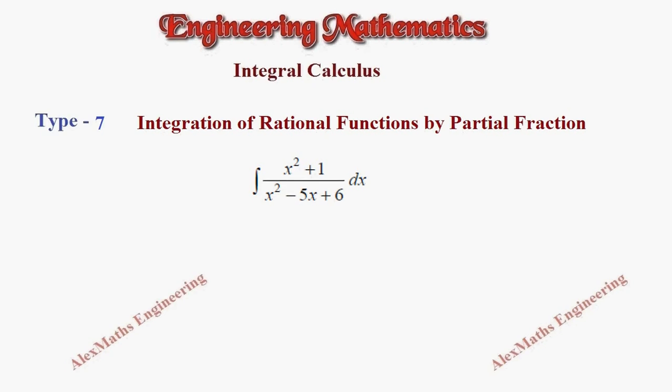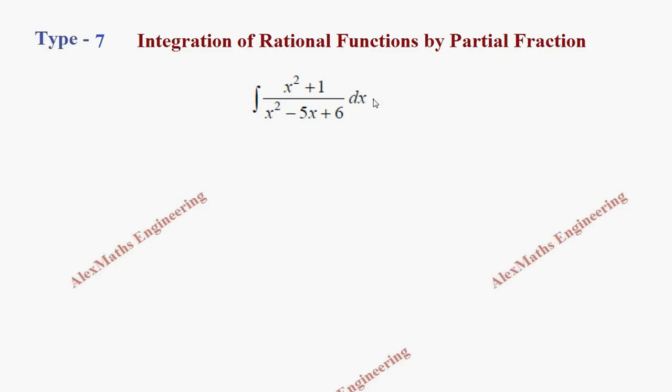So for integration purpose, we are going to convert this into a rational function by long division. I'm taking the numerator x² + 1 and I'm going to divide this by the denominator x² - 5x + 6. We multiply with 1, then 1 times x² is x², 1 times -5x is -5x, and plus 6. We have to subtract, so for subtraction I have to change all the signs of the second terms.